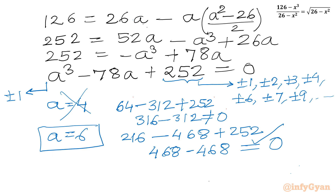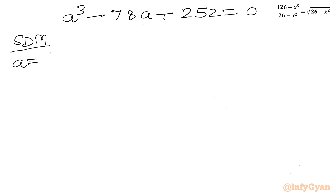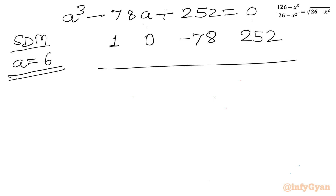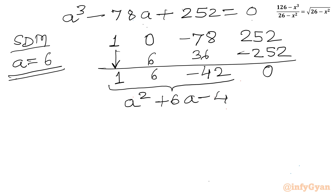Now I will use synthetic division with base solution a equals 6. Writing all the coefficients of the cubic equation and applying synthetic division: 1, then 6 times 1 is 6, then 6 times 6 is 36, giving a coefficient of minus 42, and finally minus 252 plus 252 equals 0. So the resulting quadratic equation is A² plus 6A minus 42 equals 0.